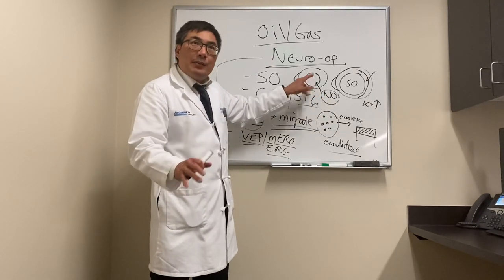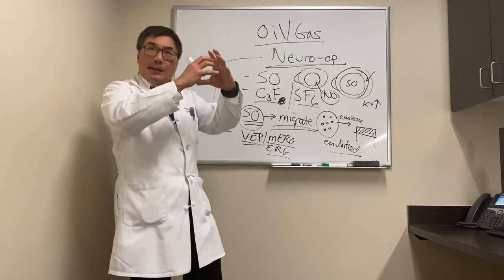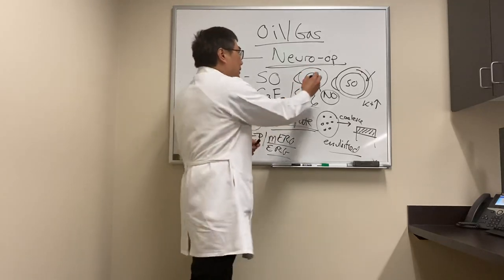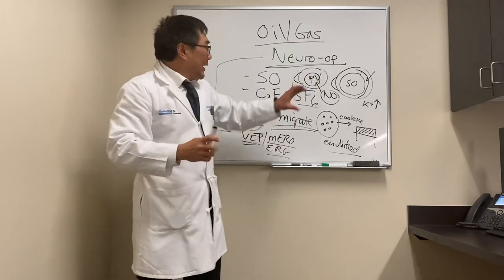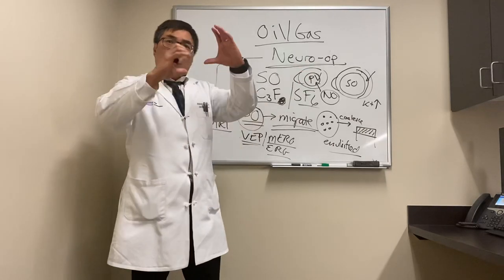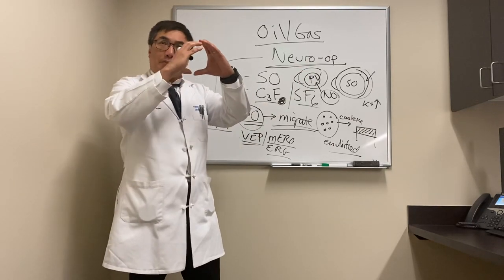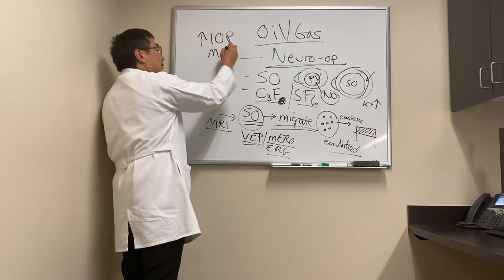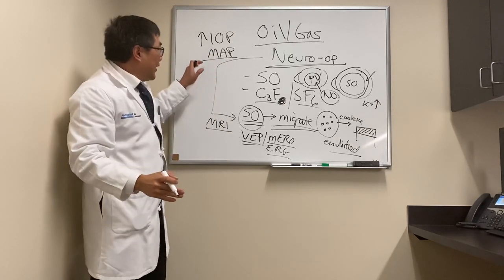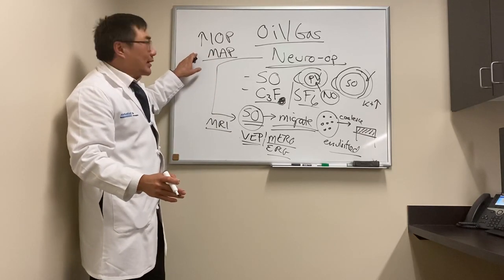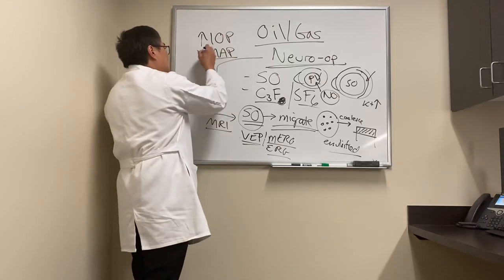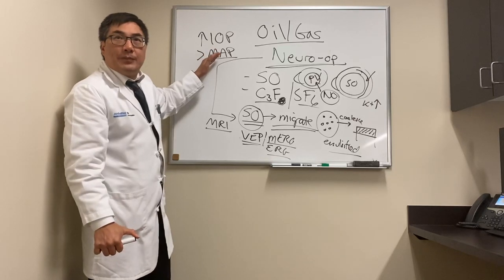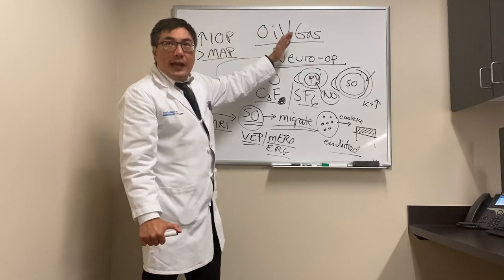Once nitrous oxide gets into the gas bubble, the bubble expands, and as it expands the intraocular pressure rises because volume is increasing in a closed system. If the IOP exceeds the critical mean arterial pressure — defined as two-thirds diastolic plus one-third systolic — that will cause a central retinal artery occlusion.